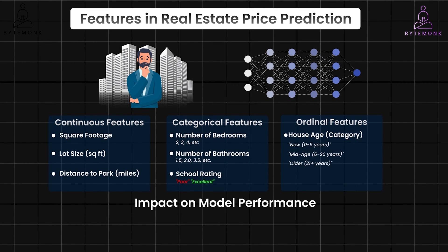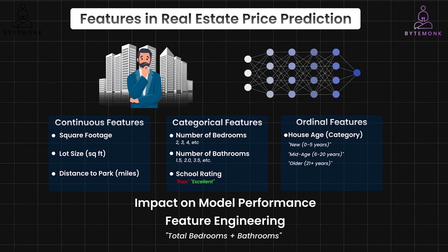The quality and selection of features directly affect how well your model predicts house prices. Choosing relevant features that capture important aspects of a house will lead to more accurate predictions. We would also need feature engineering, because sometimes raw data needs processing to create useful features. For instance, you might combine the number of bedrooms and bathrooms into a single total bedrooms-plus-bathrooms feature.